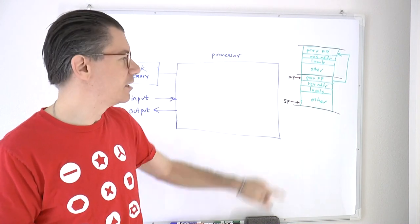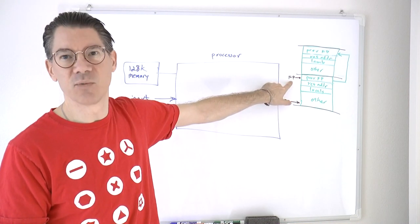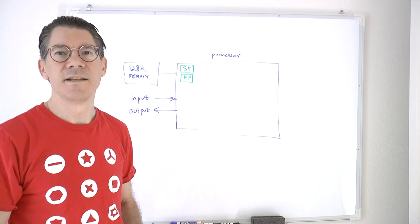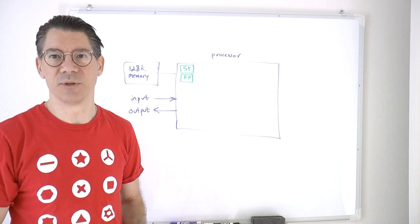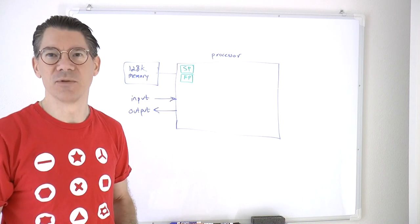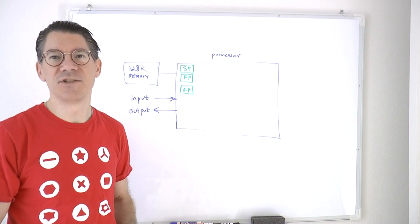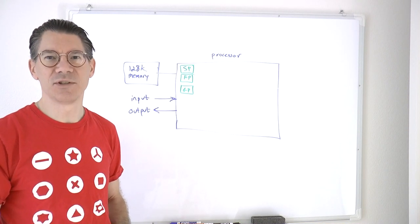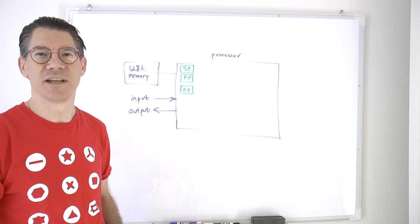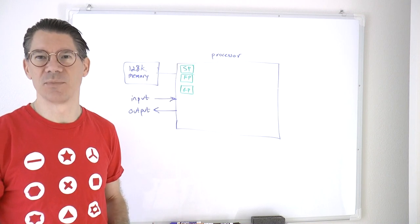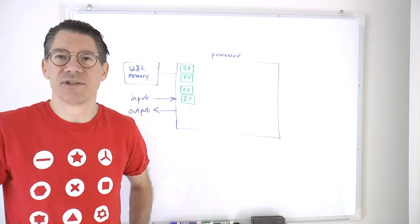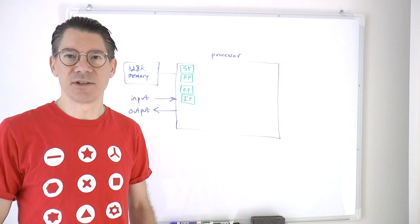It's clear that we're going to need a stack pointer and a frame pointer as registers in the processor. Because we also have global variables, it's useful to know where they're stored, so that will also go in a register. Finally, we need to know which instruction we're pointing to — that's the instruction pointer — and that also goes into a register.